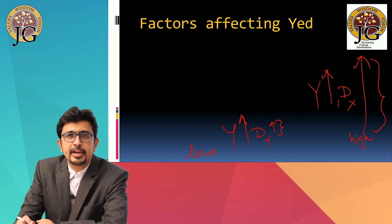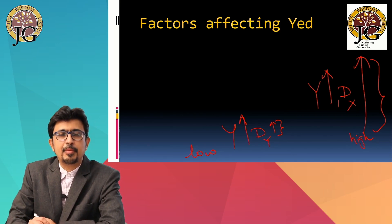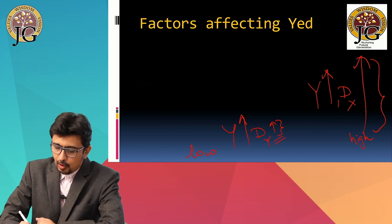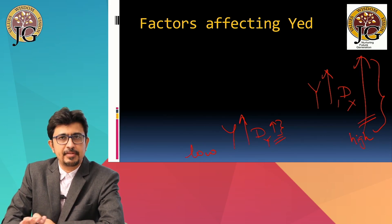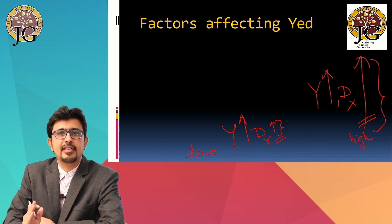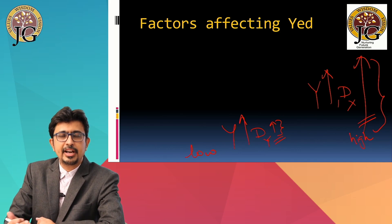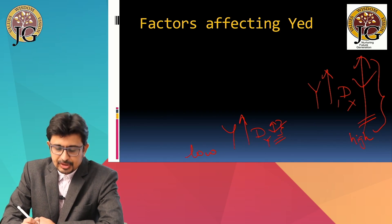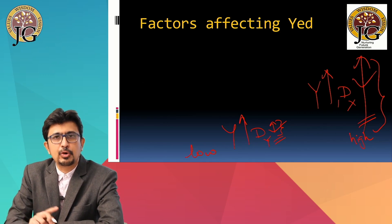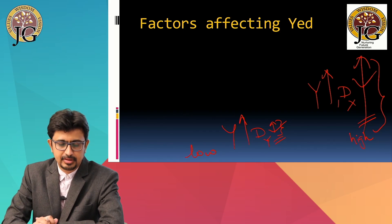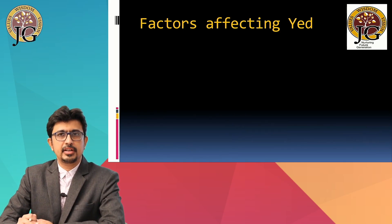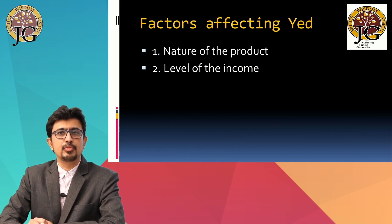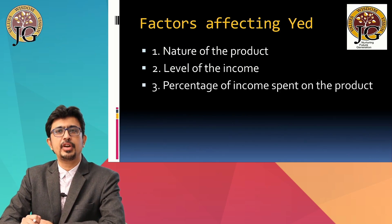In this video, we are trying to understand which are the different factors determining the income elasticity of demand — whether the arrow will be small or large. It depends on three factors. The first factor is the nature of the product. The second is the level of consumer's income. And the third is the percentage of income spent on the product.